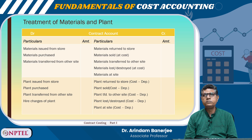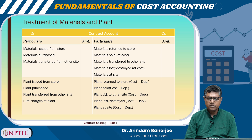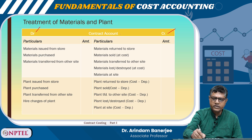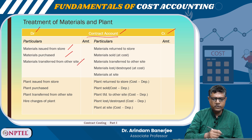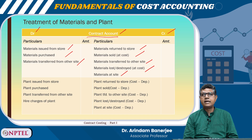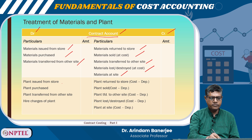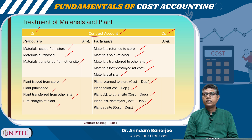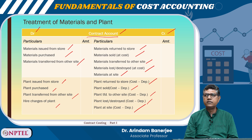Regarding materials and plant costs in the contract account format: on the debit side are material issued from store, material purchased, and material transferred from other sites. On the credit side are material returned to store, materials sold at cost, materials transferred to other sites, material lost or destroyed, and materials at site. For plant: debit side includes plant issued from store, plant purchased, plant transferred from other sites, and hire charges of plant; credit side includes plant returned to store, plant sold, plant transferred to other sites, plant lost or destroyed, and plant at site.